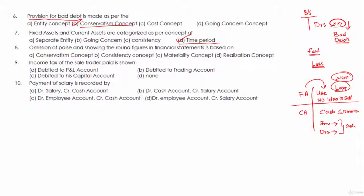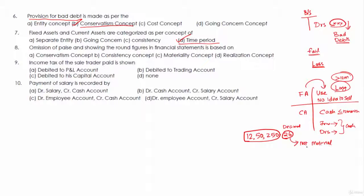Next: omission of paise and showing round figures in financial statements is based on which concept — conservatism, consistency, materiality, or realization? For example, say a payment made is twelve lakh fifty thousand two hundred and fifty rupees, and the decimal portion is point twenty-six paise. This decimal is a very small amount and is not going to have any significant impact on readers of the financial statement. Any amount that influences the decision-making of readers is called a material amount. Since this decimal is not material in nature, omission of paise is based on the materiality concept.